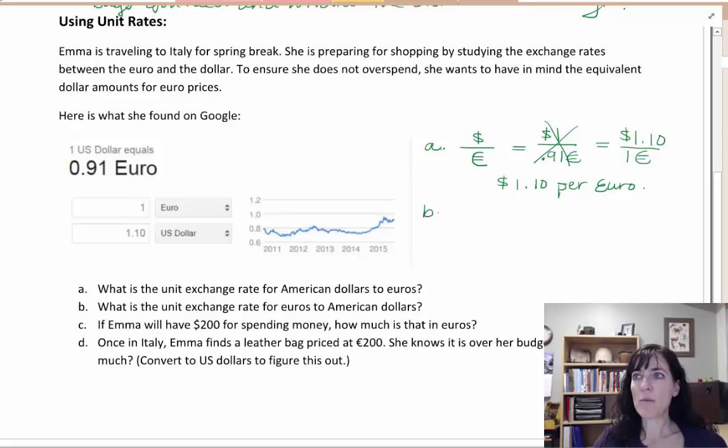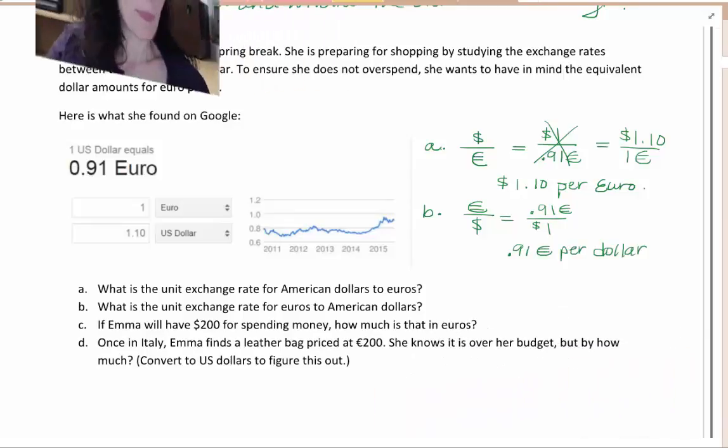And then part B, we want the unit exchange rate for euros to American dollars. So that's going to be euros to dollars, and that's the one that we wrote a minute ago. So we'll put 0.91 euros over one dollar - 0.91 euros per dollar.